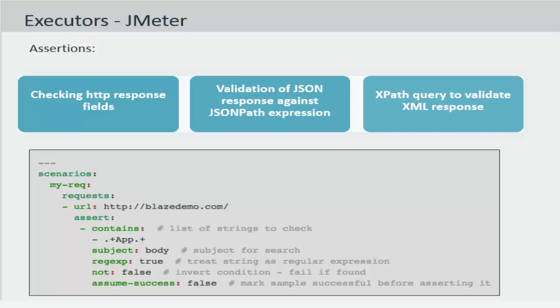If you see the example on the screen, I'm running a request to the blaze demo URL and I can assert for the presence of the APP expression. This is a regular expression as identified by the regexp set to true. And the other settings available for JMeter assertions are also available in Taurus. For example, assume success.